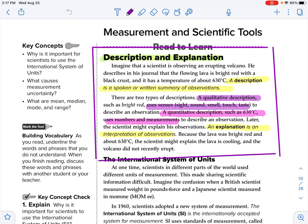A description is a spoken or written summary of observations. There are two types of descriptions, qualitative and quantitative. Alright. So this is what we did when we did our gumdrop lab and when we did that notes page with the ice cream sundae. So think back to that. So a qualitative description such as bright red uses senses, sight, sound, smell, touch, taste to describe an observation. So make sure that you get that highlighted.